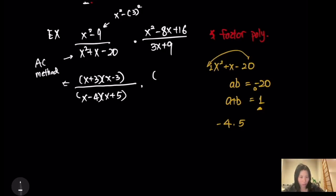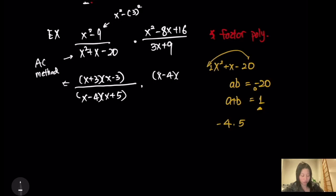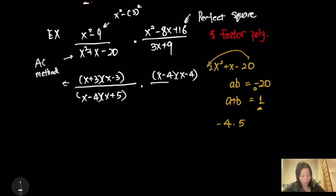For the second polynomial, use the AC method — pause the video and practice by yourself. You might use the AC method, or if you're familiar with the perfect square, you might get it right away. The answer is (x + 3)(x + 3).